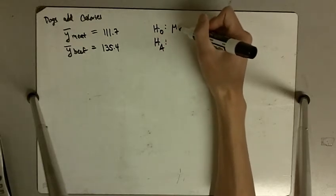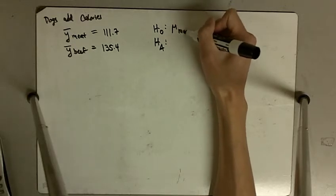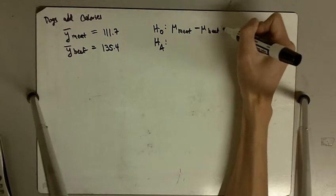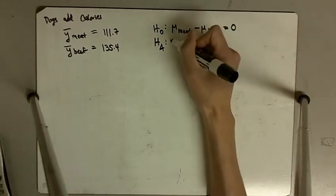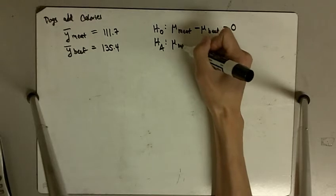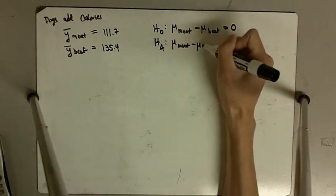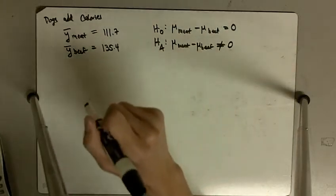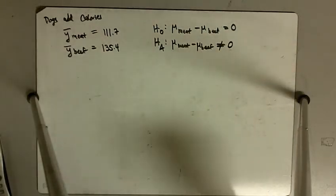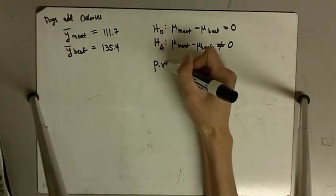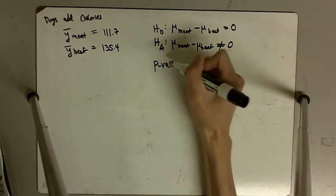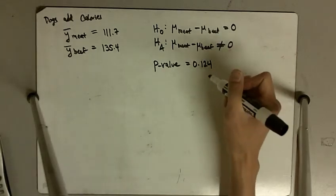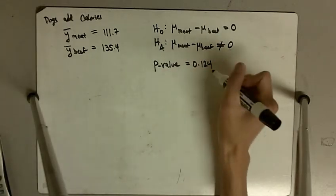We did a test of hypotheses. The null hypothesis is that the mean of group one, the meat hot dogs, minus the mean of the beef hot dogs is equal to zero—that there is no difference. And the alternative is that there was a difference, does not equal zero. Our p-value for this test ended up being 0.124.